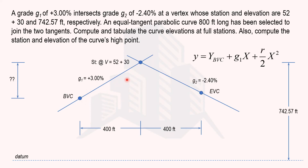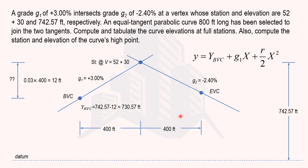The grade is 3% and the horizontal distance from BVC to the vertex is 400 feet, so the vertical distance is 3% × 400 = 12 feet. Therefore, the elevation at BVC is 742.57 − 12 = 730.57 feet. Now we can move on to calculating the elevation at full stations and tabulating the results.